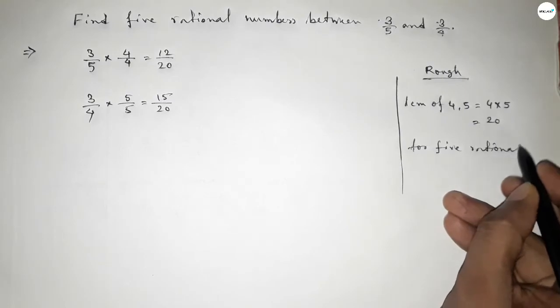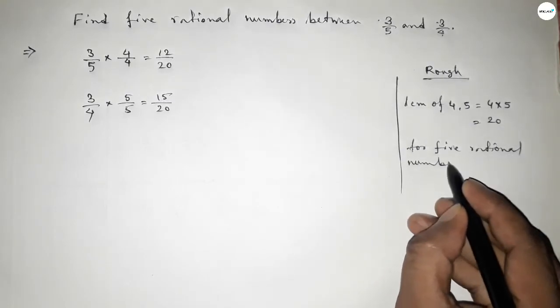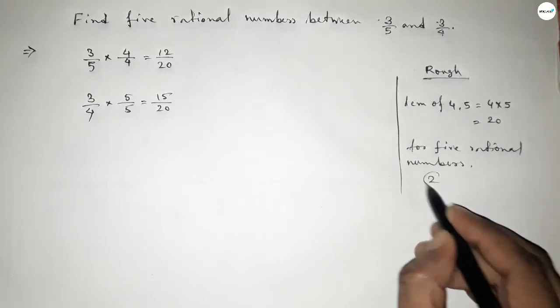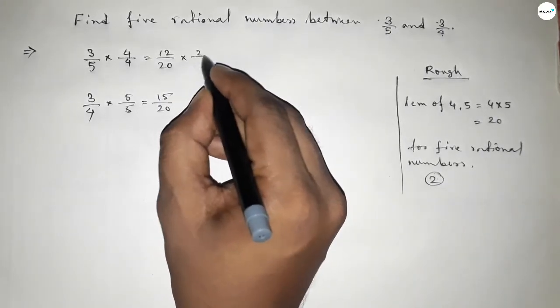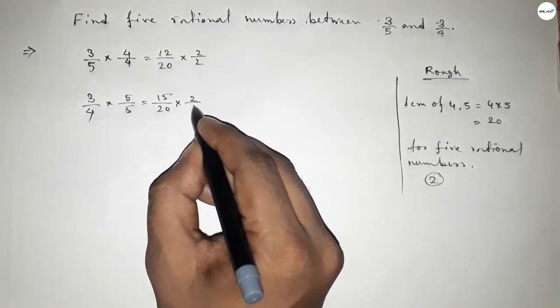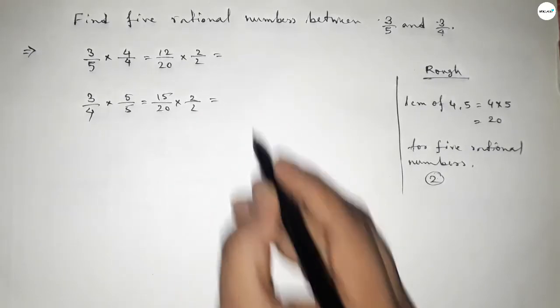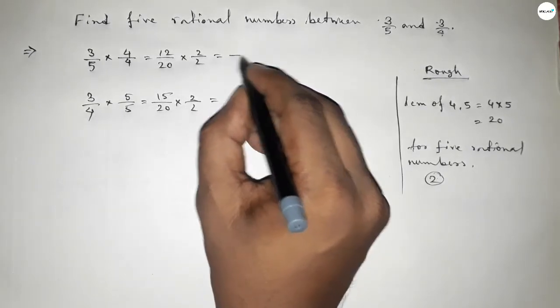Now for this particular sum we have to follow this method: we should multiply both fractions by 2. So here also up and down by 2.